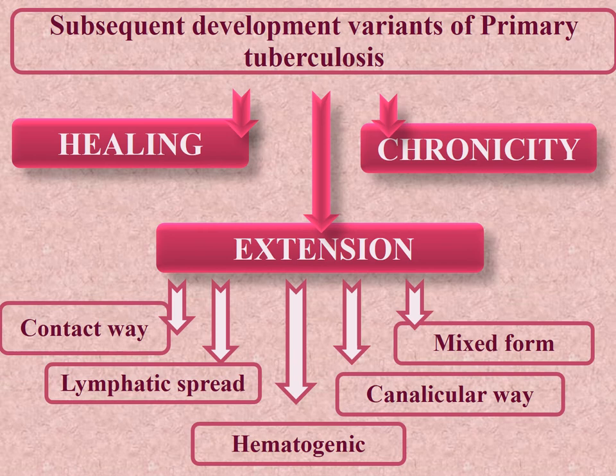Separation of immunological homeostasis can result in extension of the tuberculosis process to adjacent tissues and organs. Generalization occurs and may develop in five forms: contact way (direct extension of the primary focus), lymphatic spread, hematogenic dissemination by blood vessels, canalicular way by anatomic channels, and mixed form.